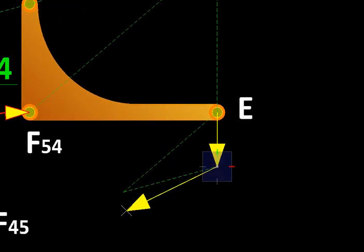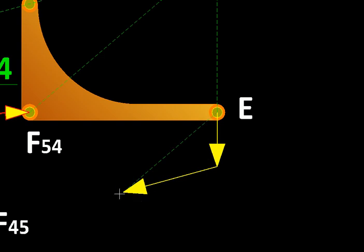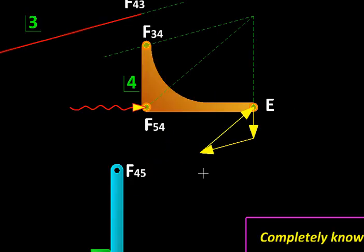So when I draw the forces, they will be directed like this and the third force will be directed like this. So now all three forces on the bell crank lever are known.